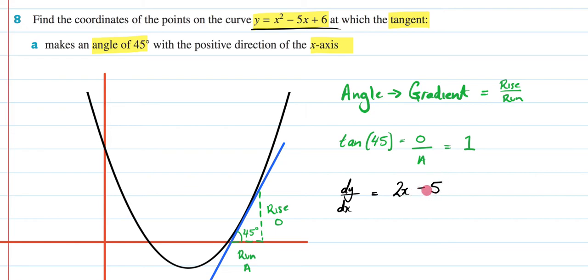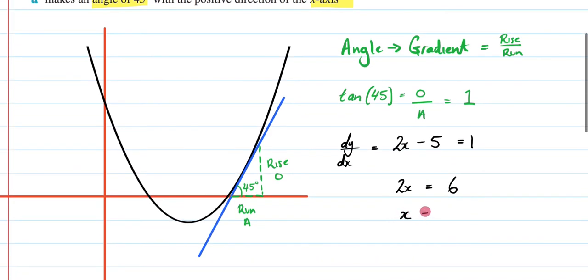Now, we're trying to figure out at what point this graph is going to have a gradient of 1. So, what I'm going to do is set this equal to 1 and then solve it for x. So, that means I'm going to get 2x = 6 because I'm just adding 5 to both sides and then I'm going to get x = 3 because I divided both sides by 2.